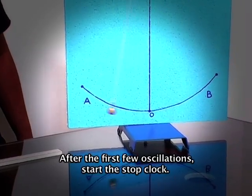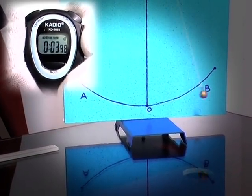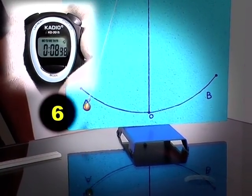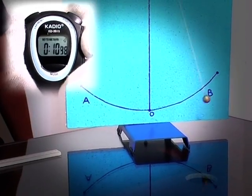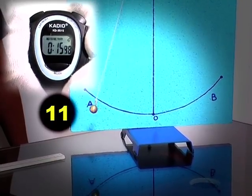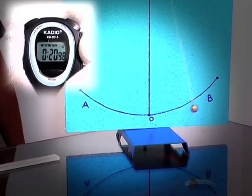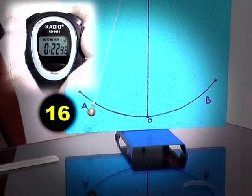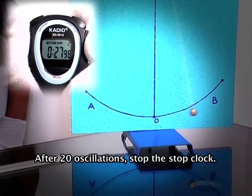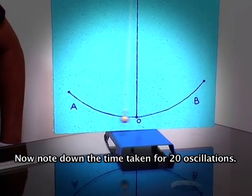After the first few oscillations start the stop clock. After 20 oscillations stop the stop clock. Now note down the time taken for 20 oscillations.